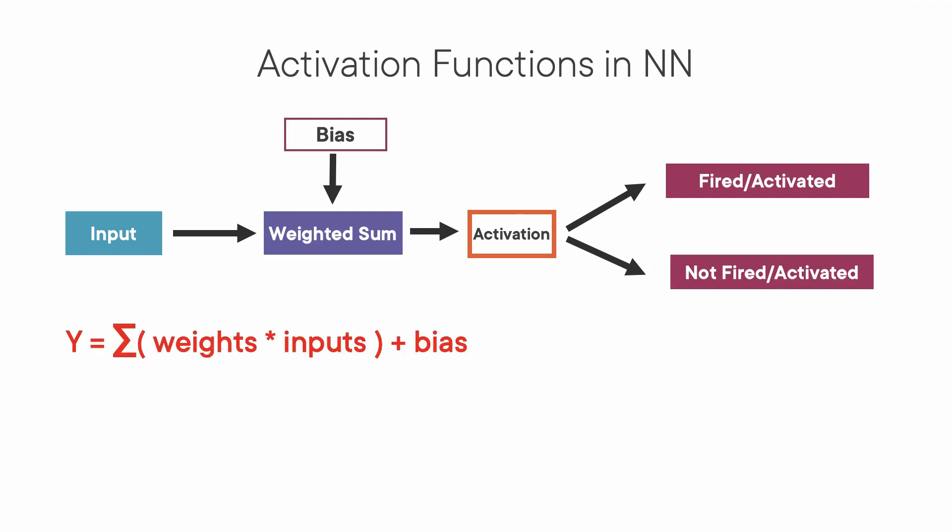Here's how we present it mathematically. In this equation, the value of Y can be anything ranging from minus infinity to plus infinity. The neuron doesn't really know the boundaries of the value. Then how do we decide whether the neuron should fire or not? That's the reason we add an activation function to check the Y value produced by a neuron and decide whether outside connections should consider this neuron as fired or not.